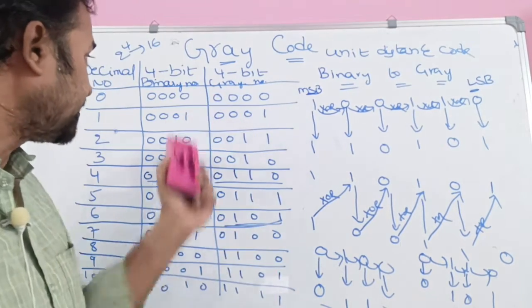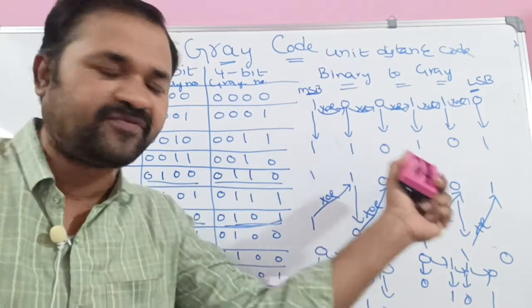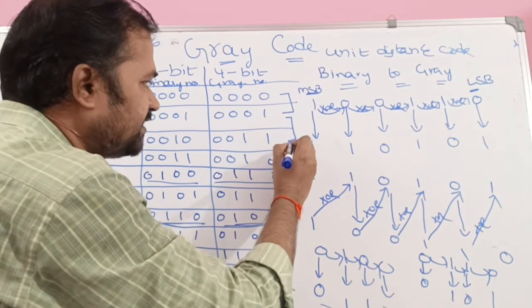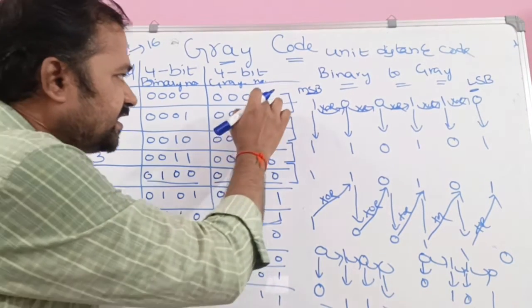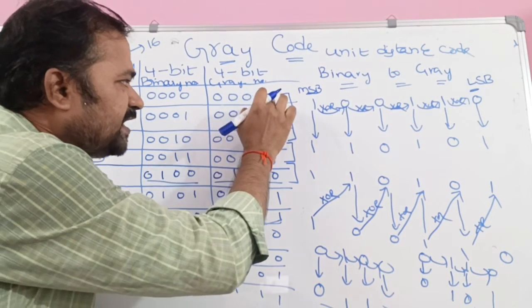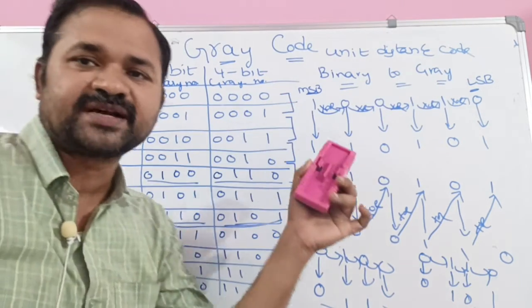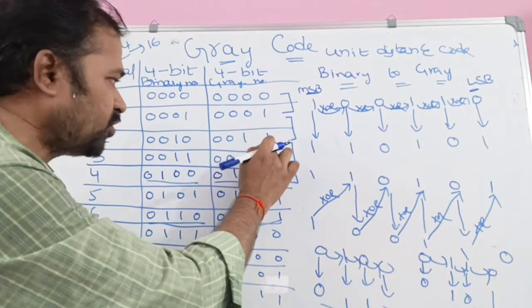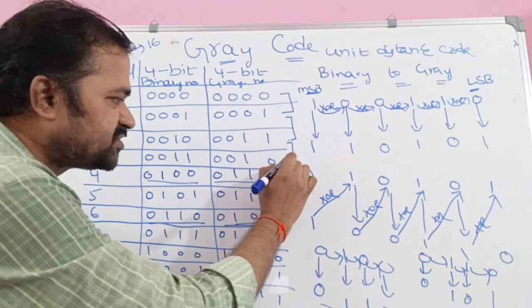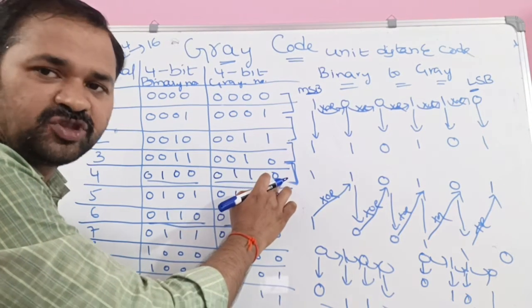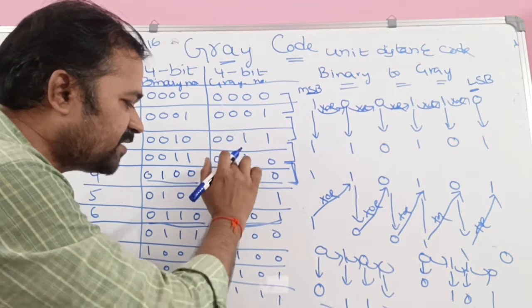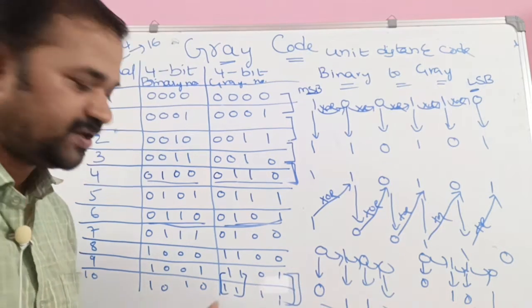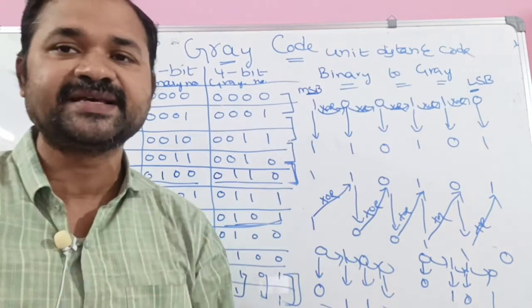The first column represents decimal numbers, the second column represents binary numbers, and the third column represents the gray code for the corresponding binary numbers. If we observe successive binary numbers, two successive numbers have their first two and last bits the same — only one bit differs. Unit distance code means two successive binary numbers differ by only one bit. Likewise for all pairs of successive gray code values — only one bit differs. That is why gray code is also called unit distance code.